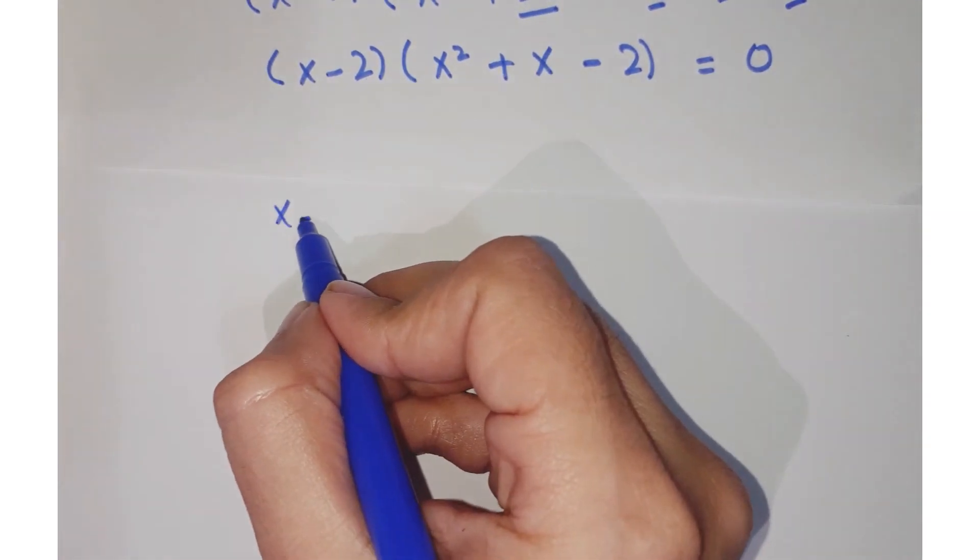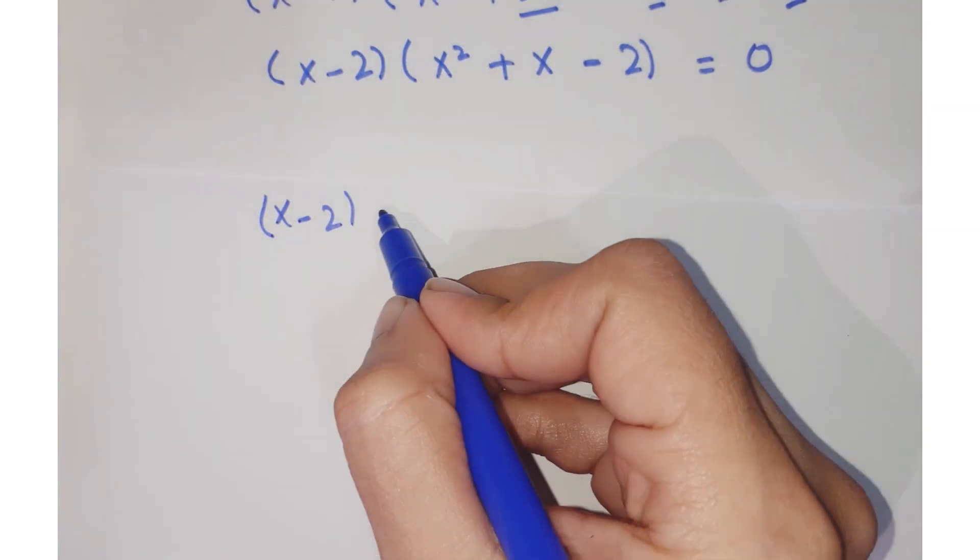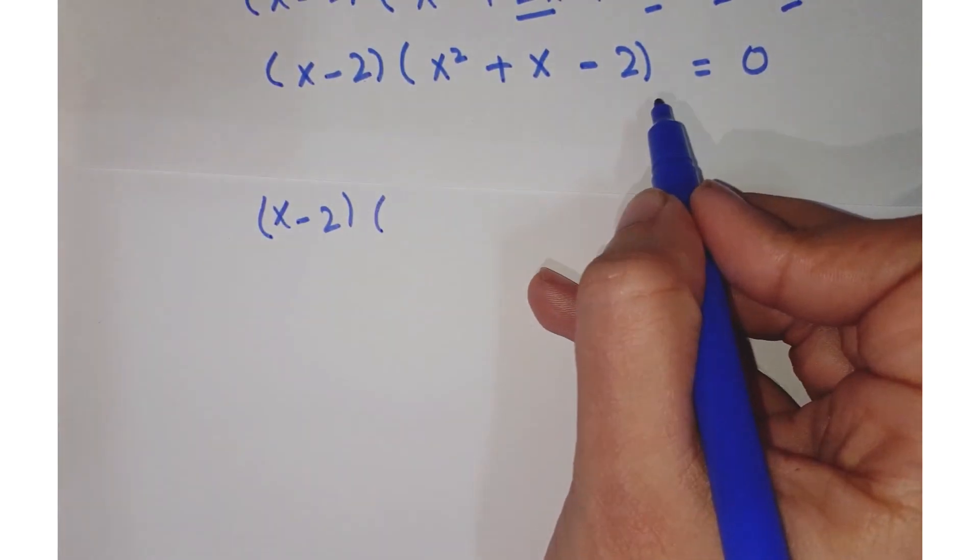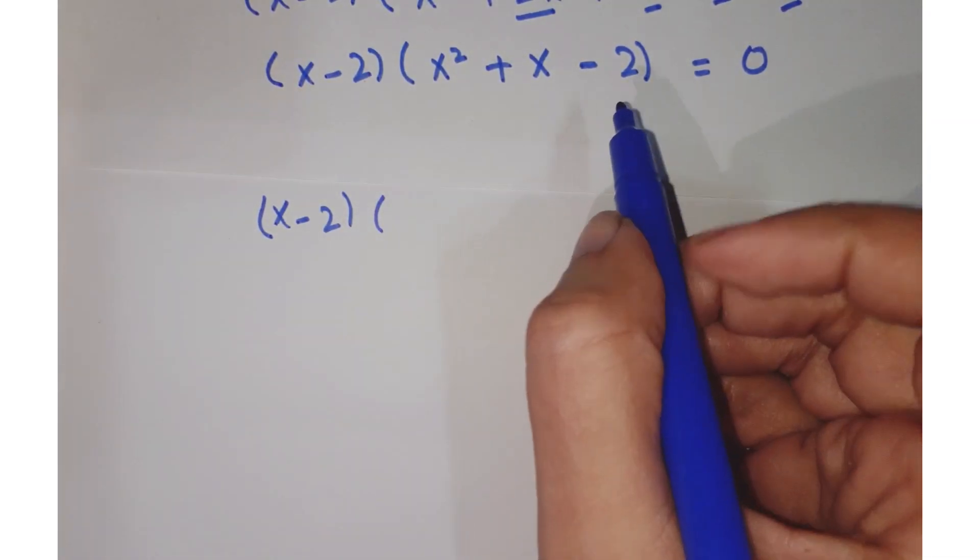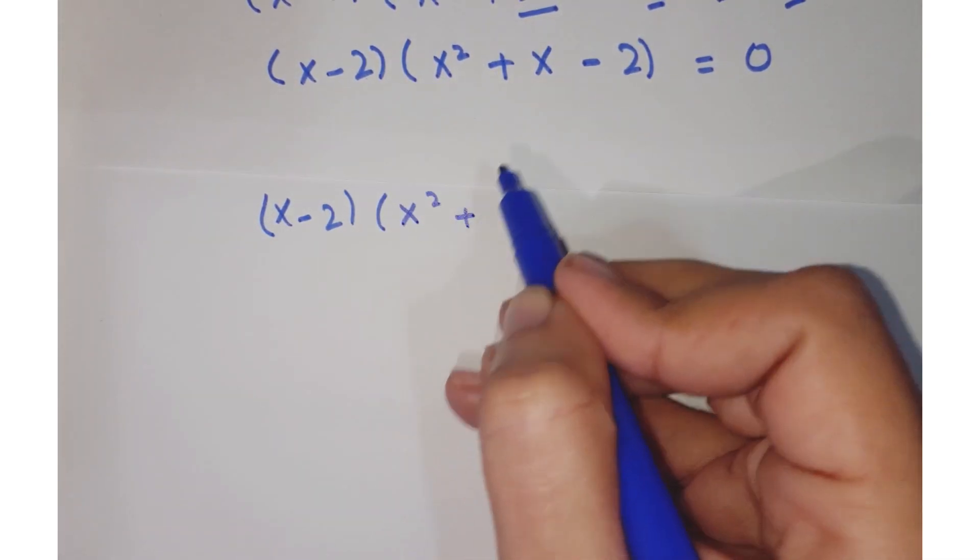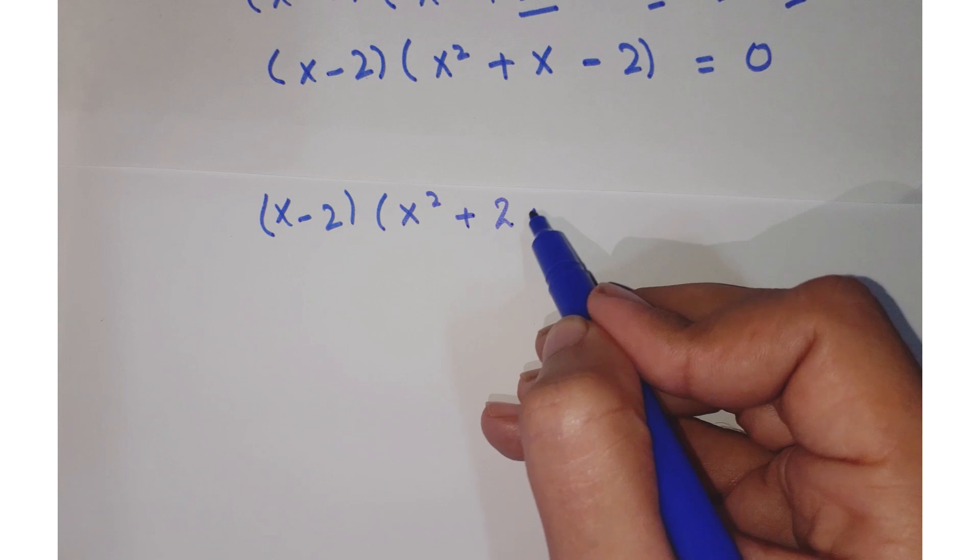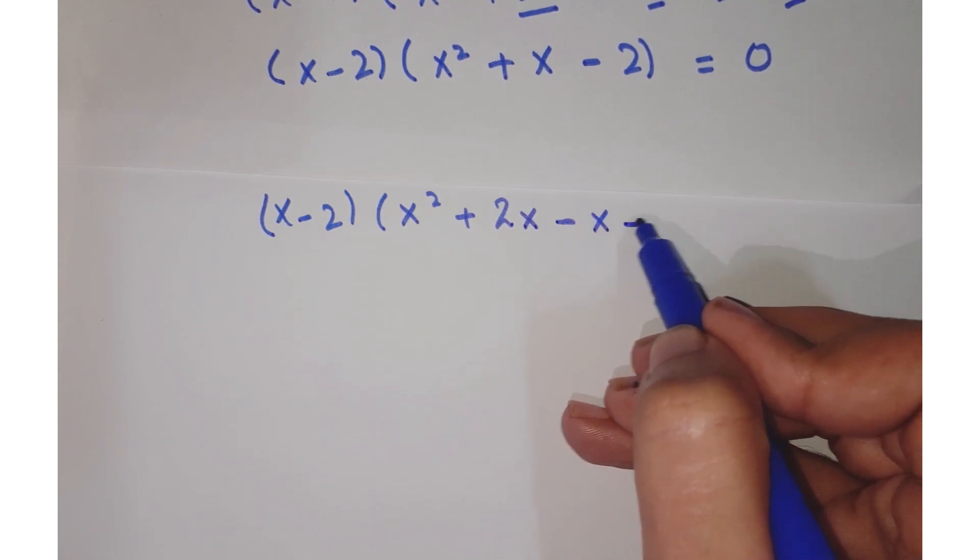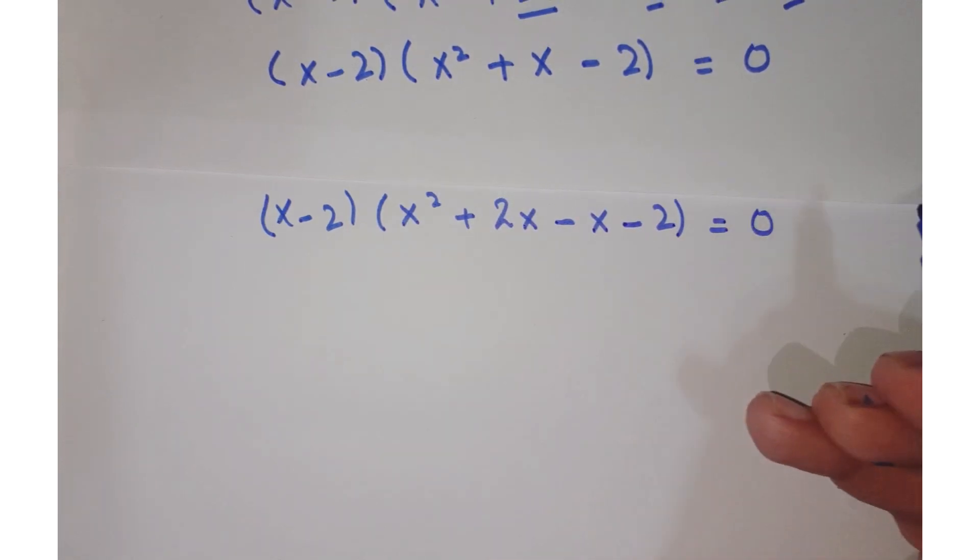Now this is x² + x - 2. This is a quadratic equation, so you can factorize it by breaking the middle term. So you have (x-2)(x+2)(x-1) = 0.